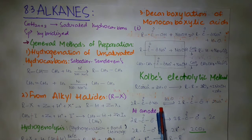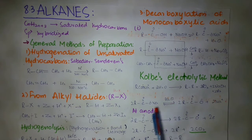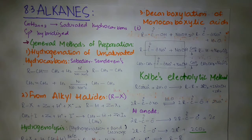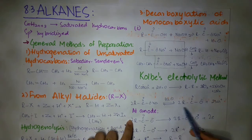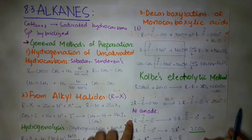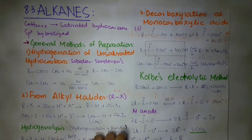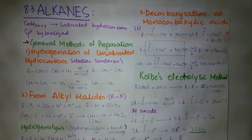In Kolbe's electrolysis, monocarboxylic acid is dissolved in water. When dissolved, it gives two ions — a negative ion (carboxylate anion) and a sodium cation. These two ions become anion and cation. The anion moves towards the anode.